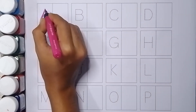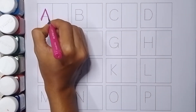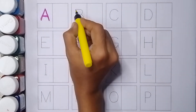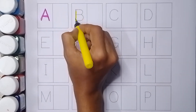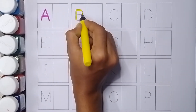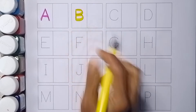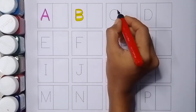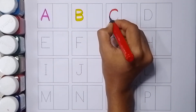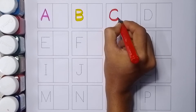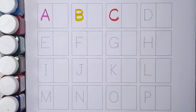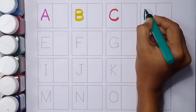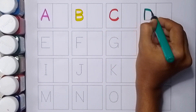A for apple. B for bowl. C for cat. D for dog.